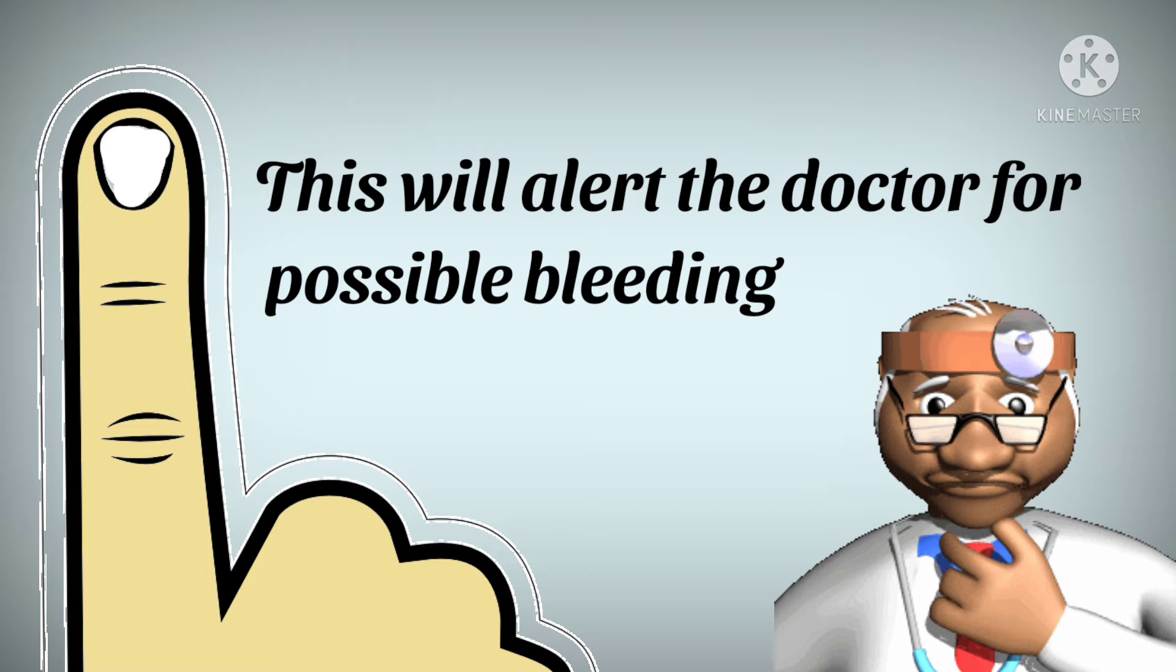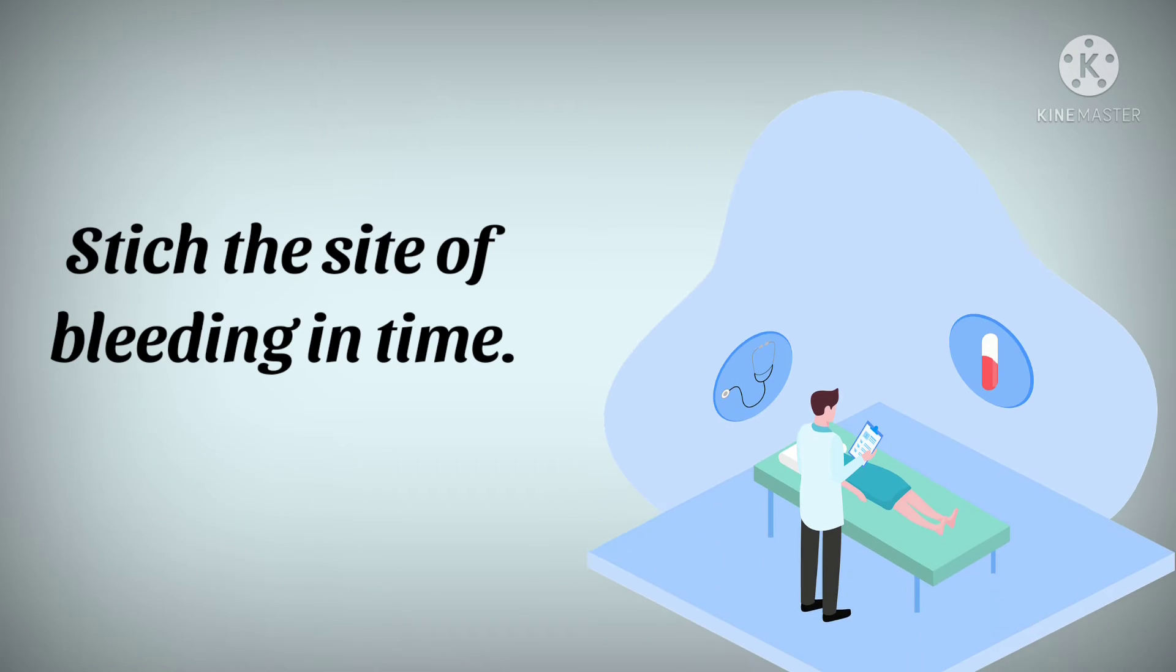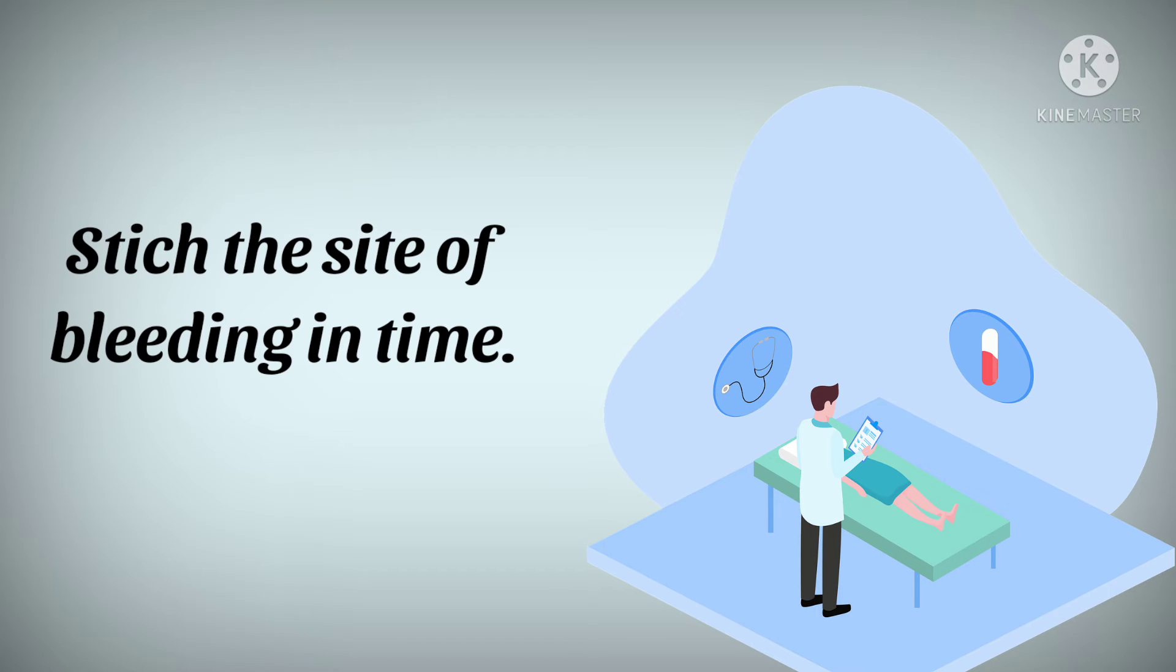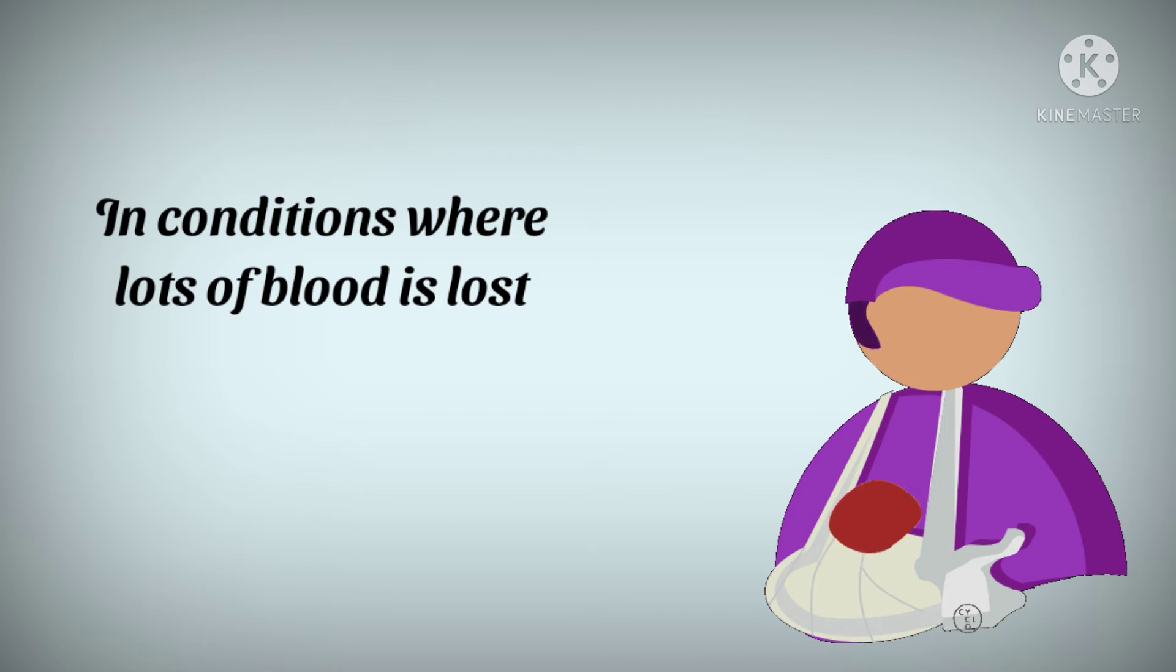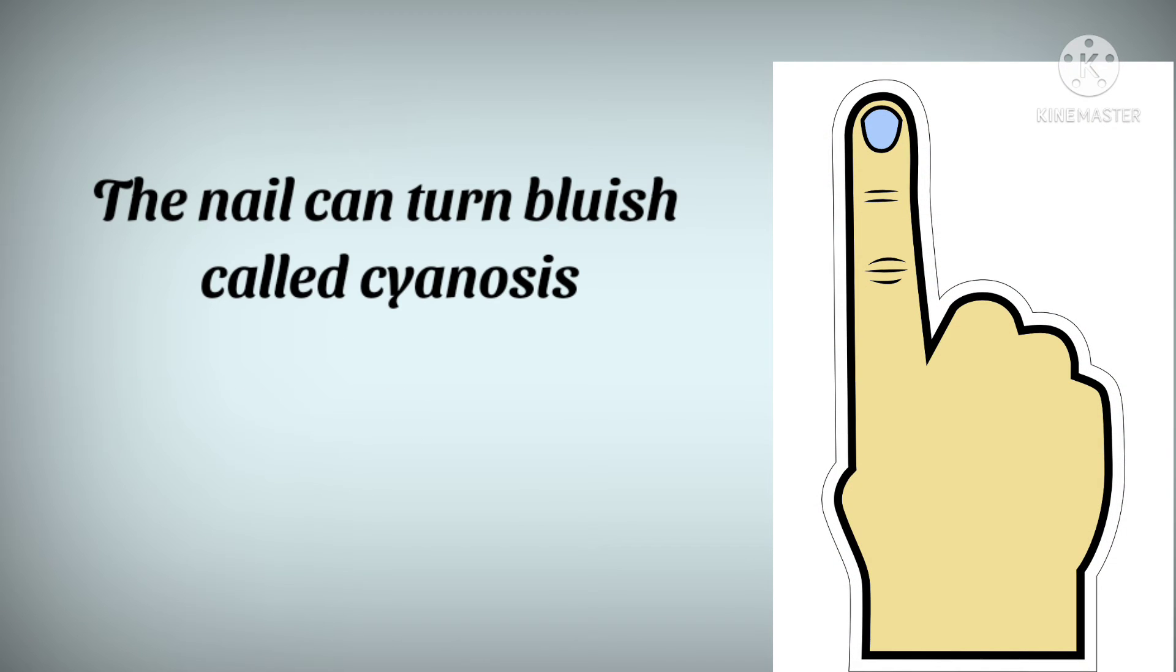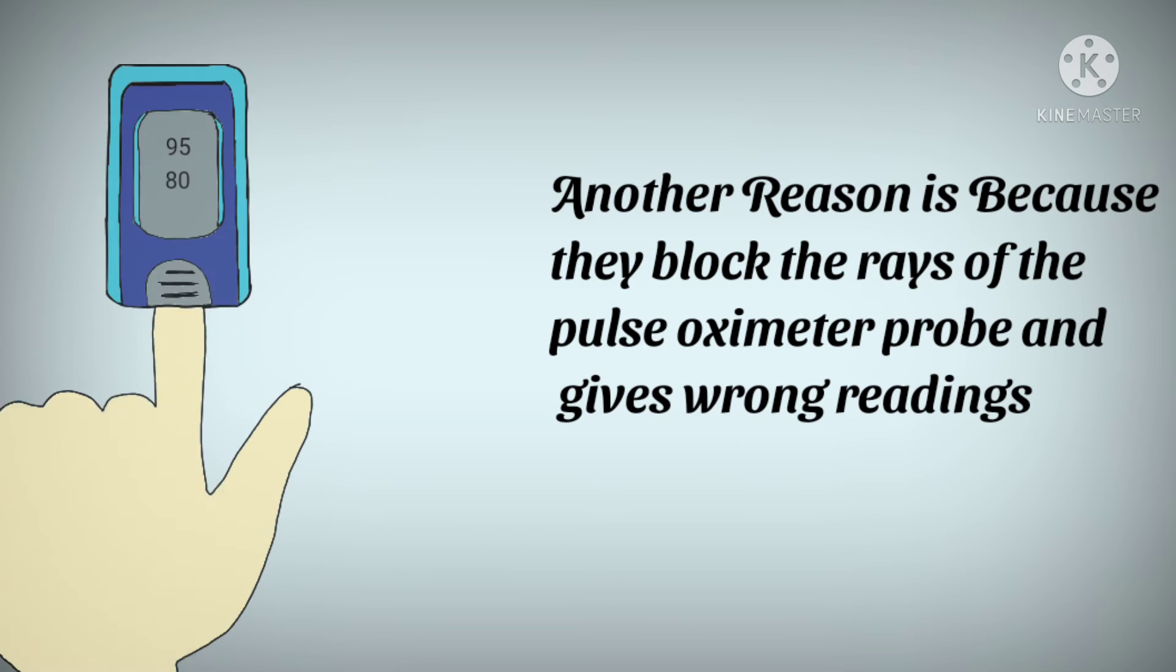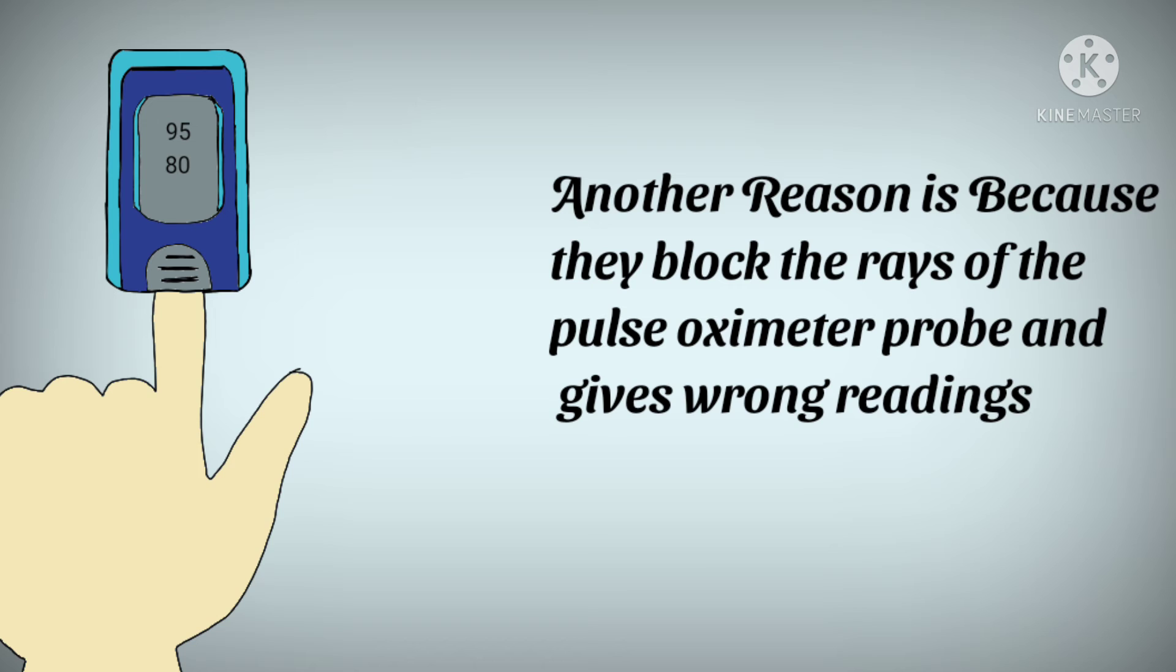This alerts the doctor to possible bleeding, which can help them stitch the bleeding part. In conditions where a lot of blood is lost and blood volume decreases, the nails can turn bluish, called cyanosis. This indicates the person requires immediate treatment.